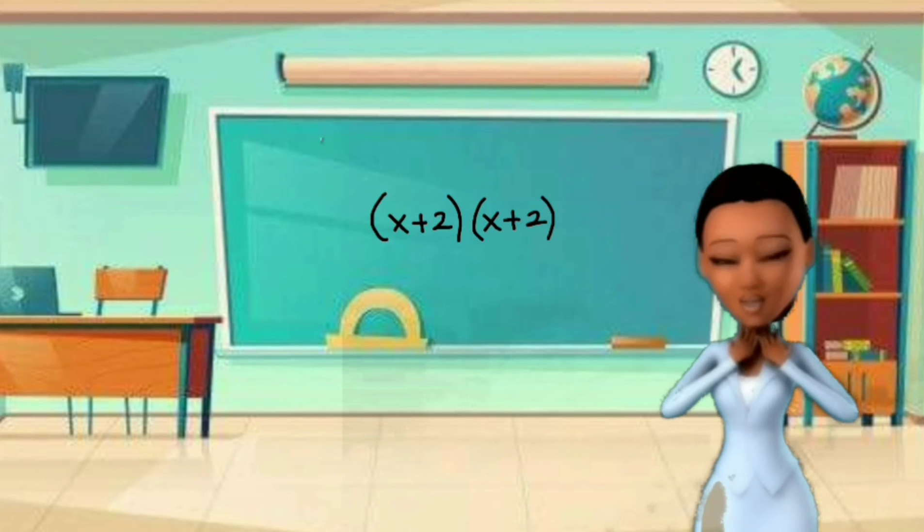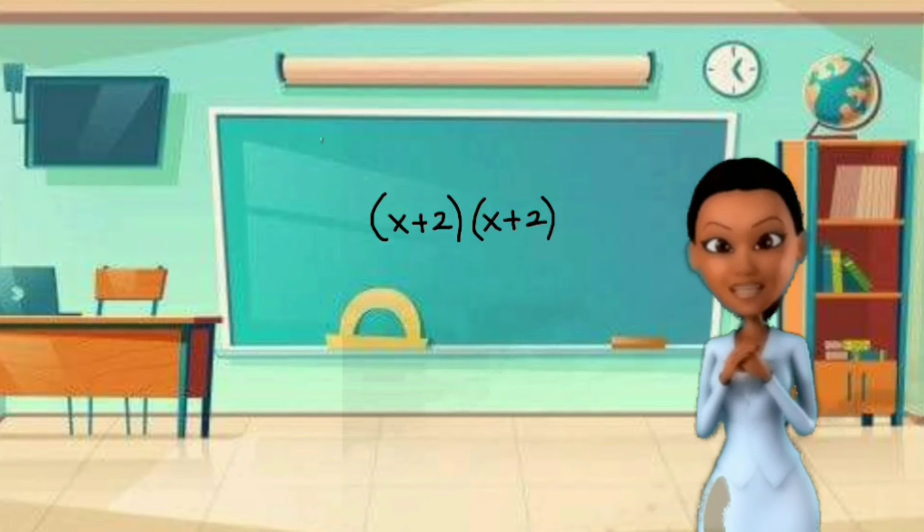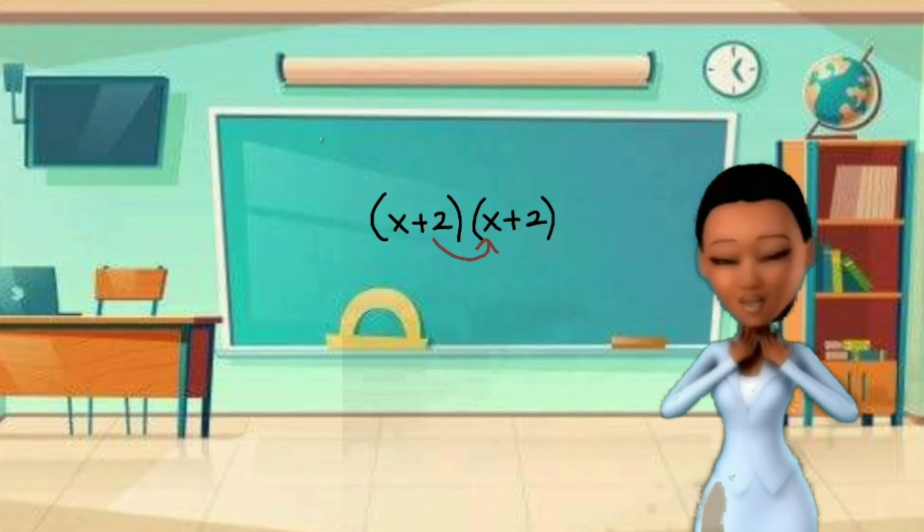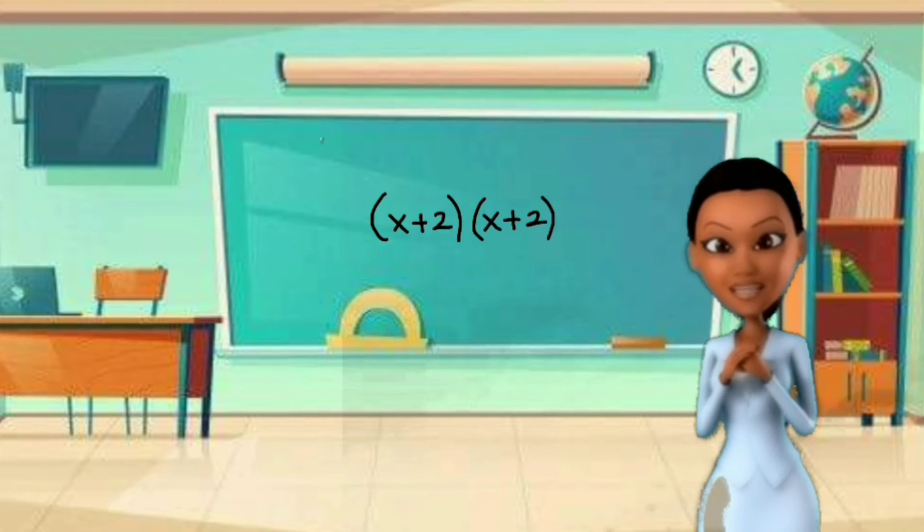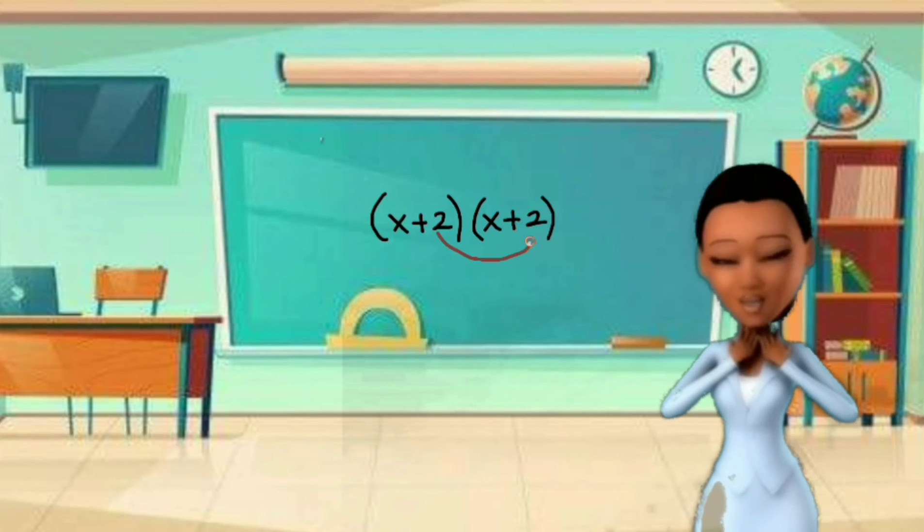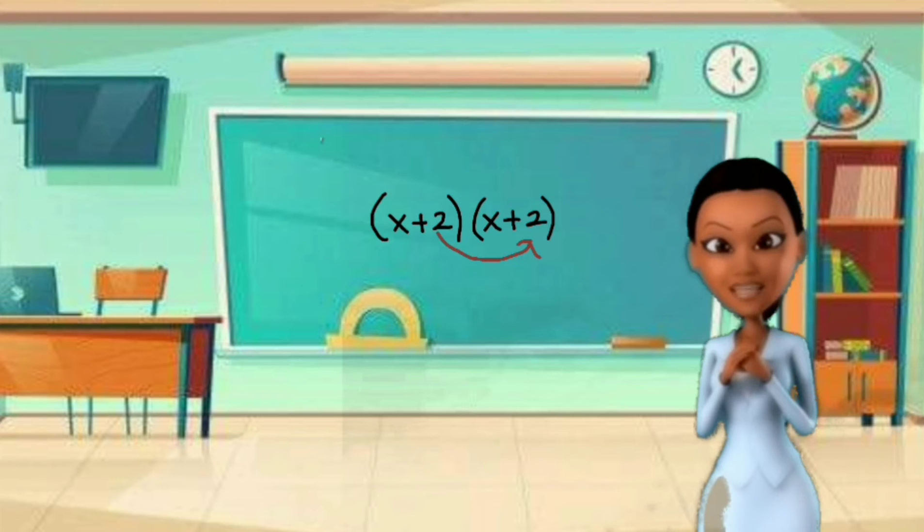Another, we multiply the inner terms, so we'll be having 2 multiplied by x equals 2x. Lastly, we multiply the last term, which is 2 times 2 equals 4.